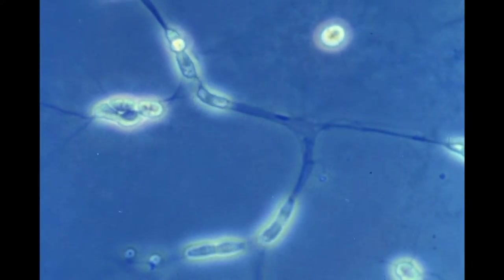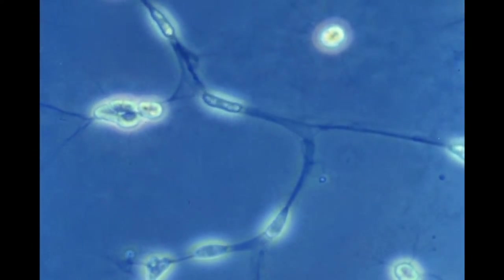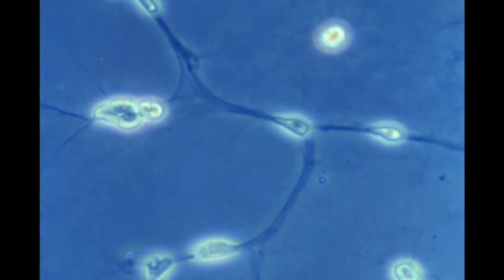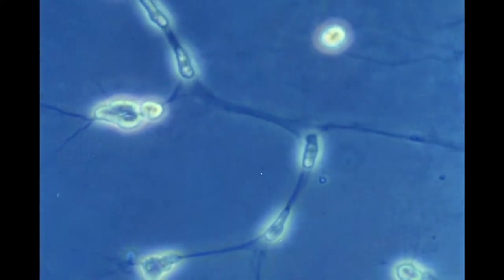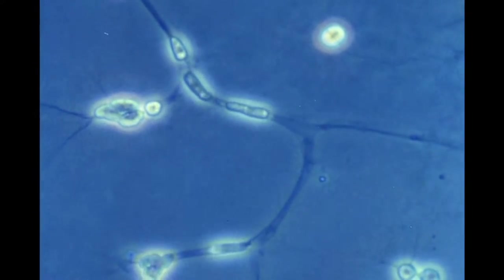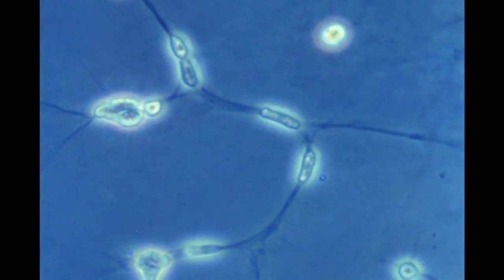The cells of labyrinthula move only within strands of the extracellular network, or matrix. Often the cells are constricted by the confining matrix. The individual cells are about 10 microns long.